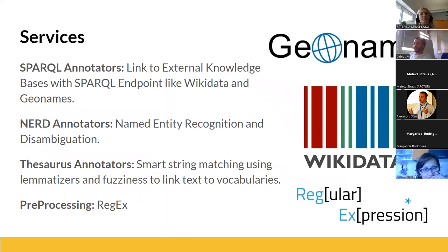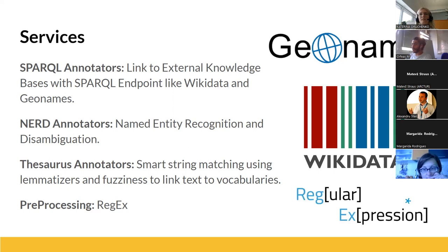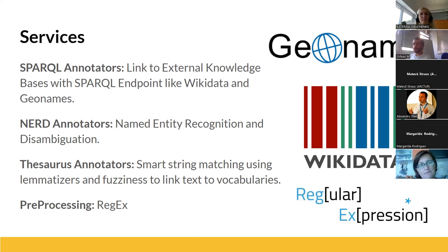The main services we use to enrich data are three main annotators. First is the SPARQL annotator, which uses the SPARQL endpoint of an external knowledge base like Wikidata, and we transform the data into a format we can use in order to link our data with this external knowledge base. Then we have a NERD annotator — an NLP tool that performs named entity recognition and disambiguation. The tool takes a text and links it to named entities like persons, organizations, place names, etc. We also have a Resource annotator which performs smart string matching with given vocabularies, and we use regular expressions to pre-process and reformat the data.